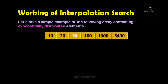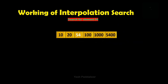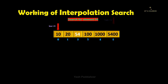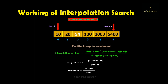Let's take another example of an array which contains data that is exponentially distributed. Let's see how interpolation search works in this case. Let's say we need to search for the element 54 from the given array. The first step is to define the low position and high position. Low value will be 0 and high value will be 5. Computing the interpolation element's position using the formula and plugging in the values, after calculating we get the answer as 0. Therefore, the interpolation element's position is 0.